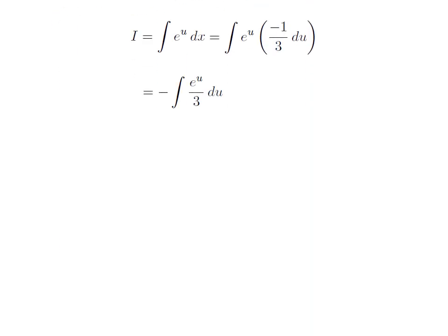Multiplying minus 1 upon 3 with e to the power u, we get i is equal to minus the integration of e to the power u divided by 3, with respect to u. This is a simple integration — 1 by 3 is the constant, and the integration of exponential of u is exponential of u. So i is equal to minus 1 third of e to the power u.